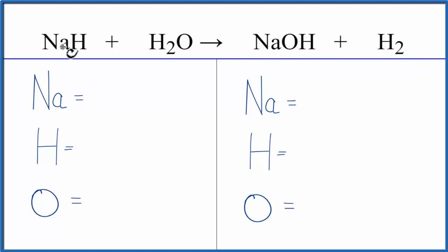We have on the reactant side of the equation one sodium. We have one hydrogen here, plus we have two hydrogens here, so we have a total of three hydrogen atoms, and then we have just one oxygen.